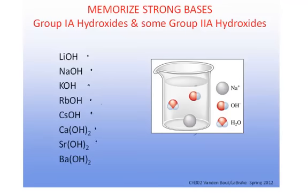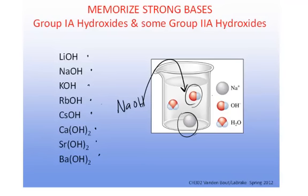Some of the Group 2A metal hydroxides are also strong bases, meaning they dissociate 100% when placed in water. Those are calcium hydroxide, strontium hydroxide, and barium hydroxide. Here is an example of sodium hydroxide being placed in water — the cation dissociates completely from the hydroxide. The difference from the oxy acids is that the hydroxide group is a polyatomic anion ionically bound to a metal cation.